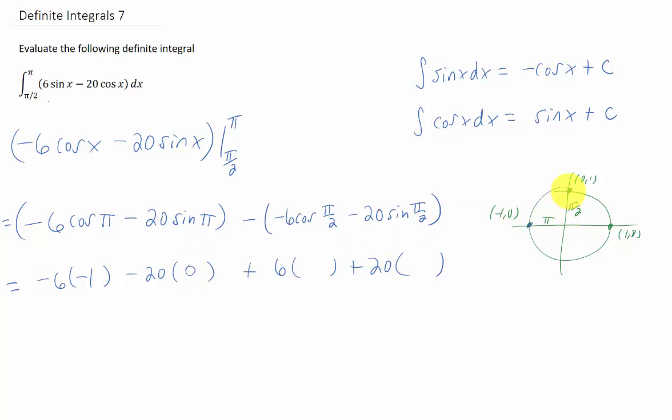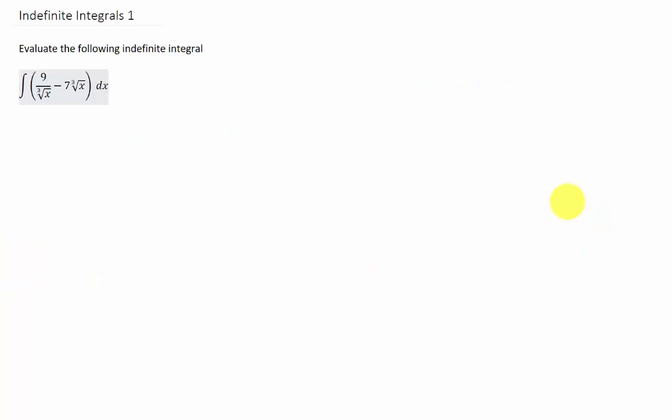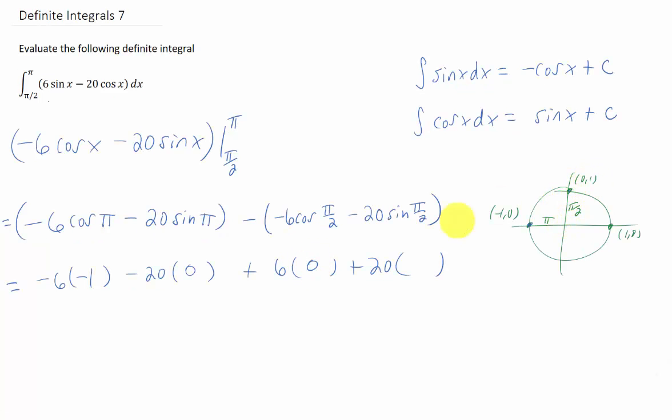Cosine of pi over two is the x value at this point up here, which is zero. And sine of pi over two is the y value at this point up here, which is one.